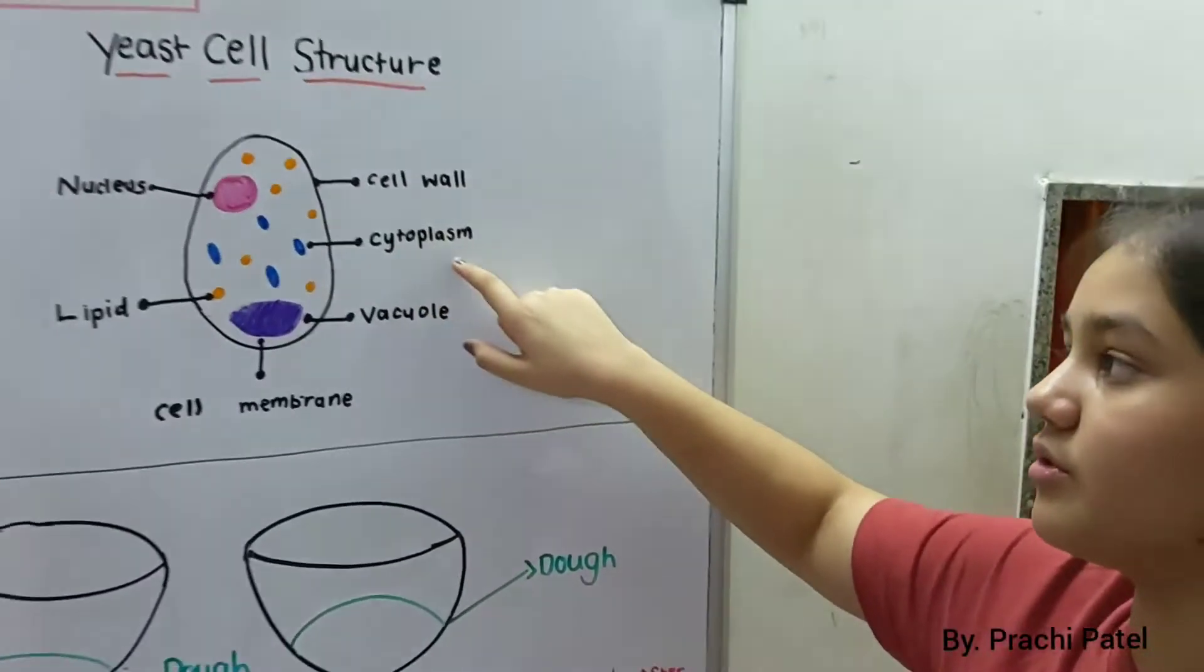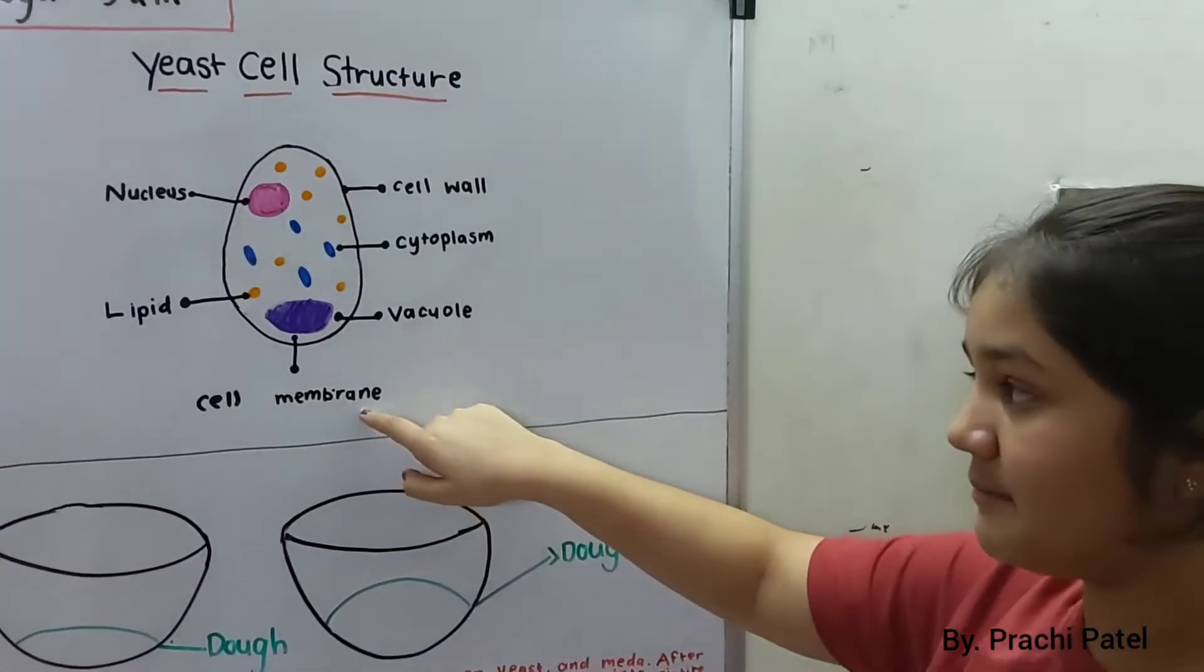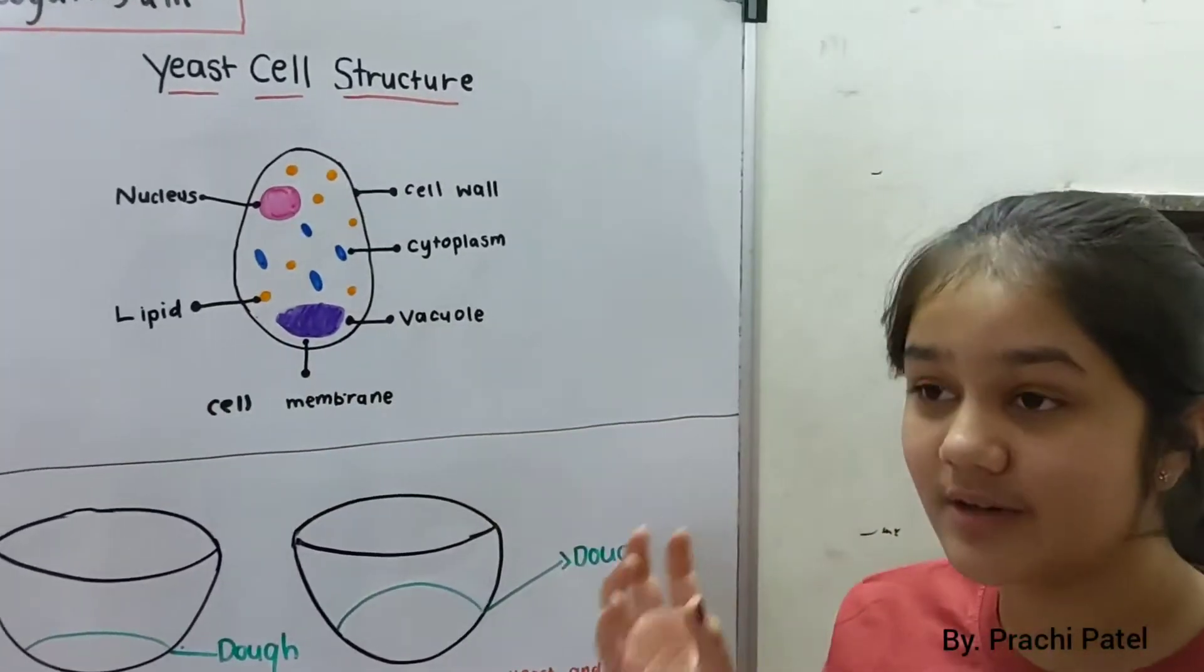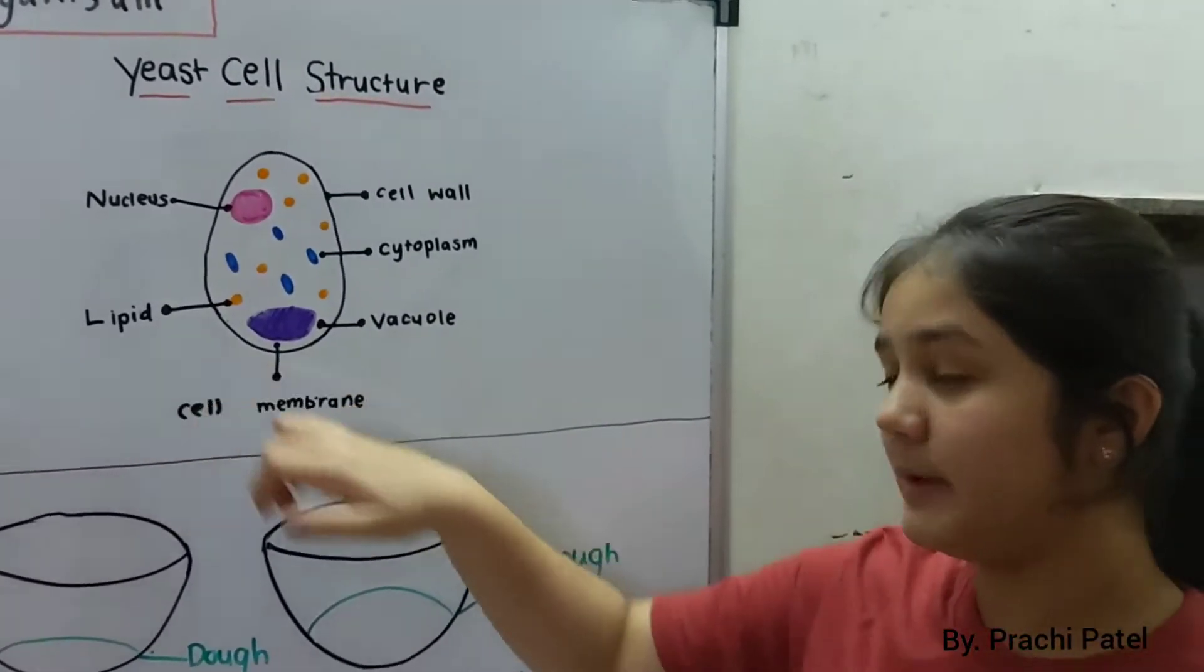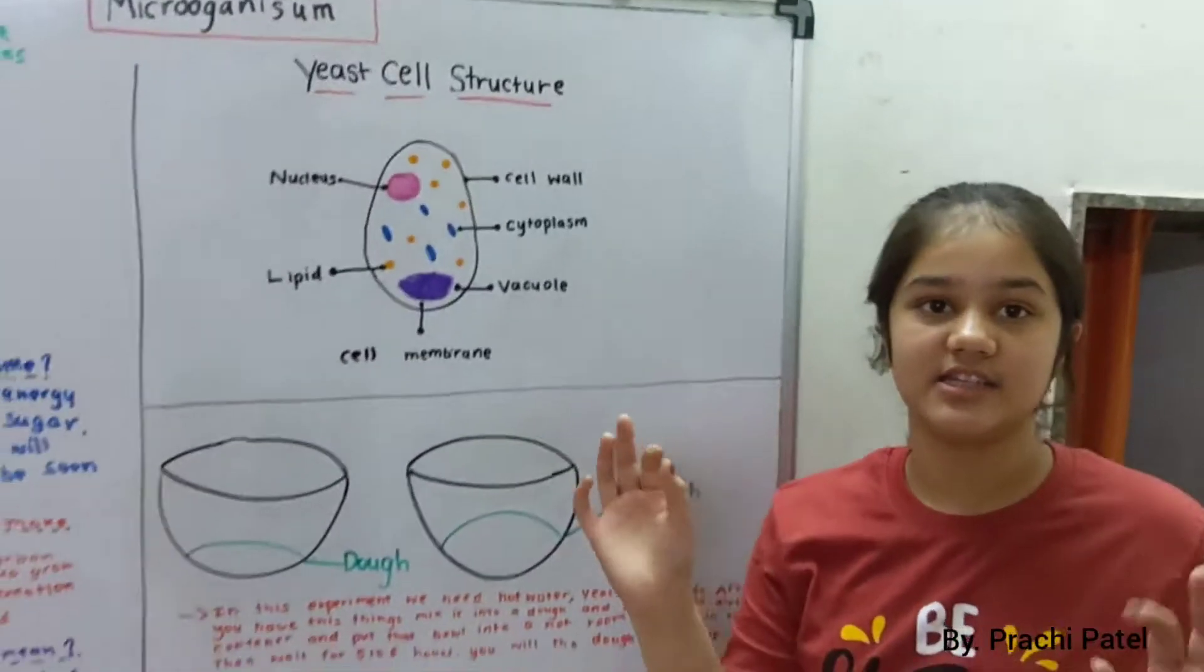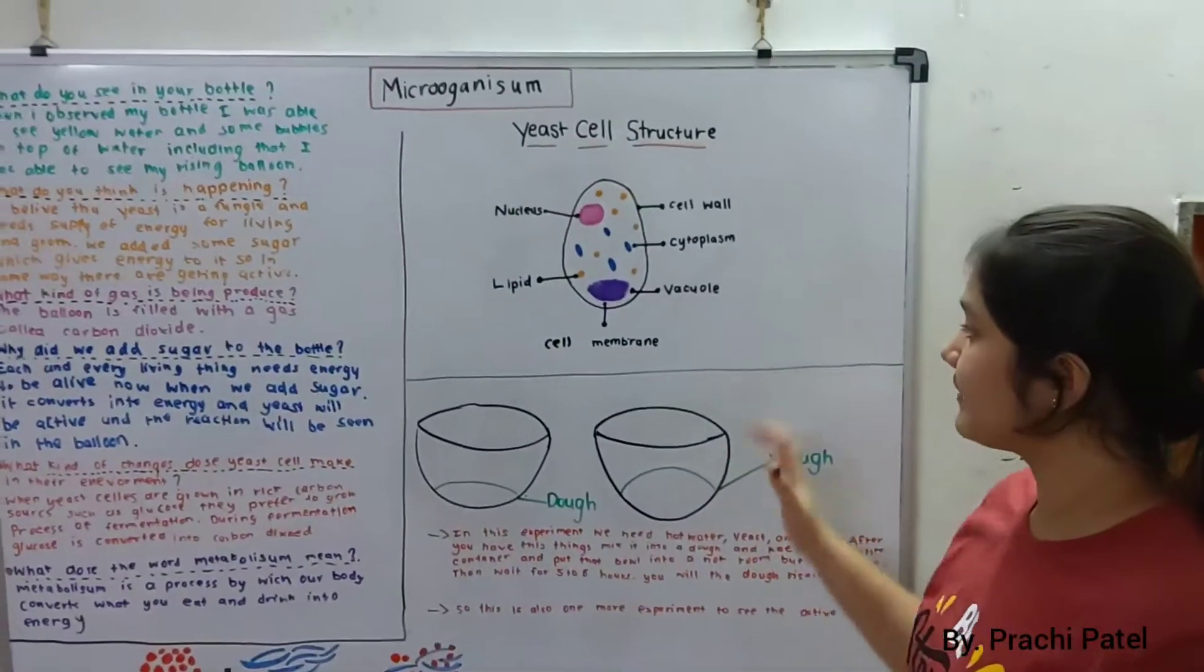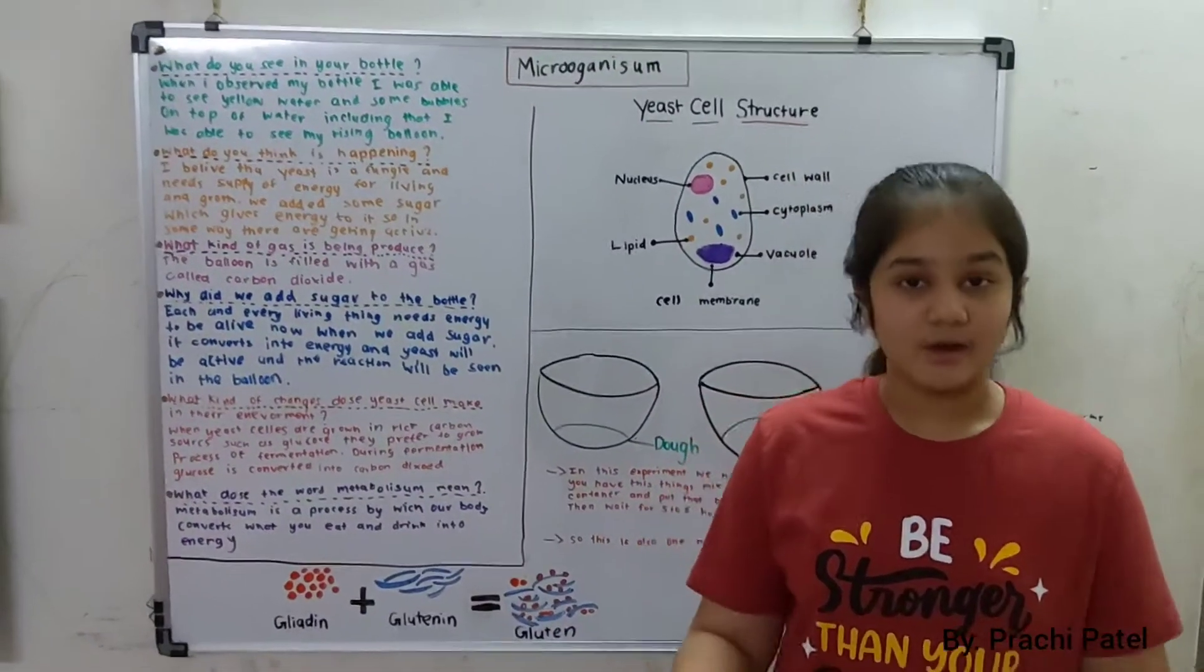Then we have chloroplast, then we have vacuole, then we have cell membrane, then a new type of part is lipid, then we have nucleus. Basically, nucleus is contained in each and every cell, I think in some of them.